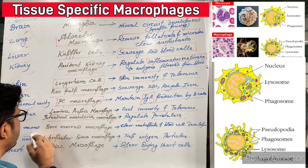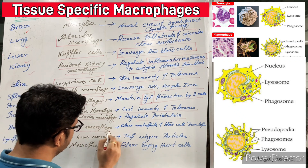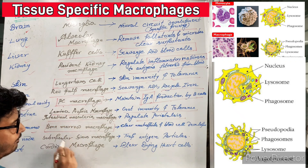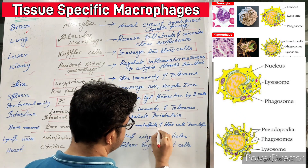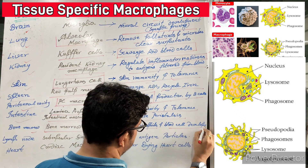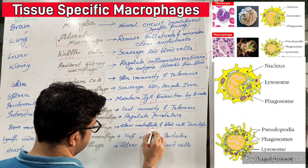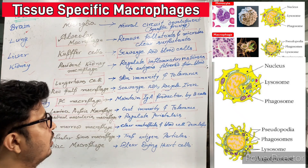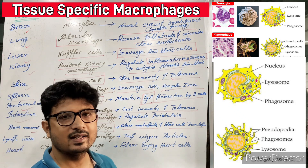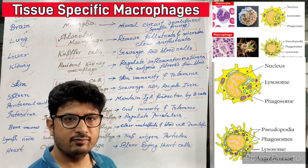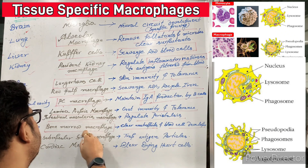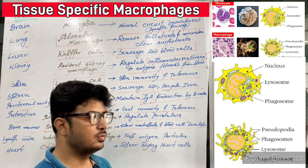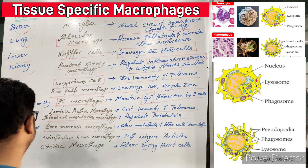In the bone marrow, bone marrow macrophages are present. What do they do? They clear neutrophils and support blood cell development. Neutrophils that are defective in their function or aging can be directly phagocytosed by these bone marrow macrophages, and new neutrophils will be produced in this region.